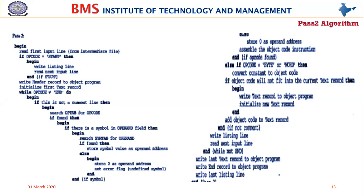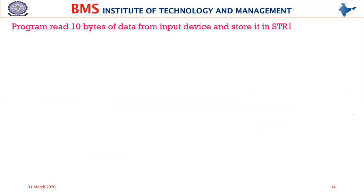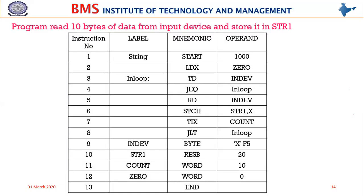We are now ready to implement the assembly using an example program. The program reads 10 bytes of data from an input device — each read gets one byte, stored into a character array called STR1 — demonstrating input device usage, loops, and indexed addressing mode in SIC.